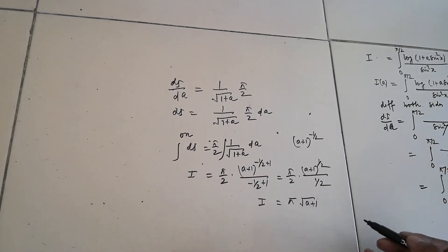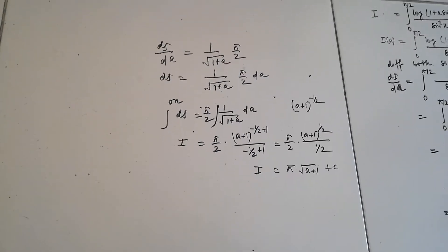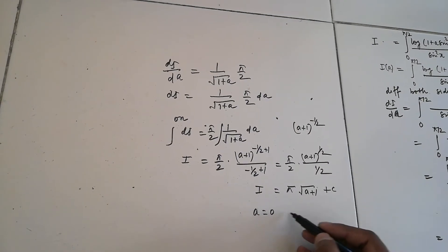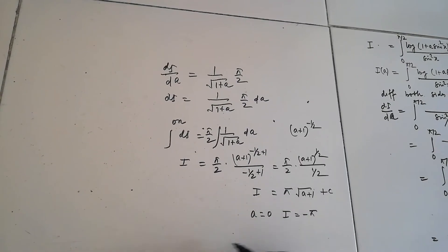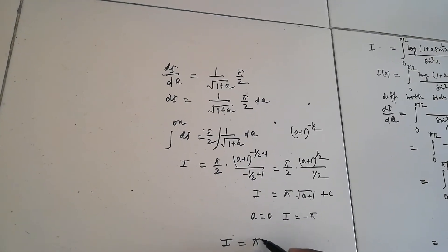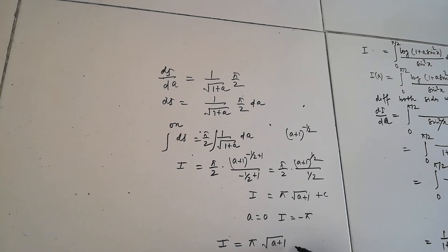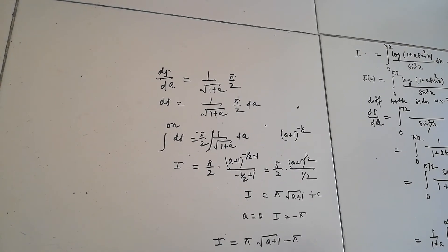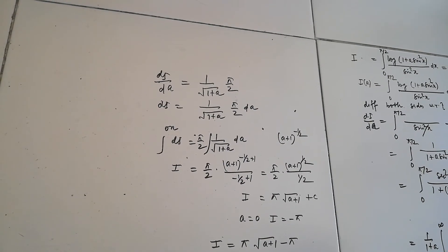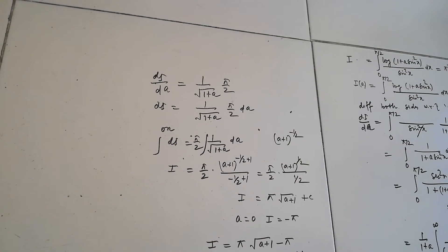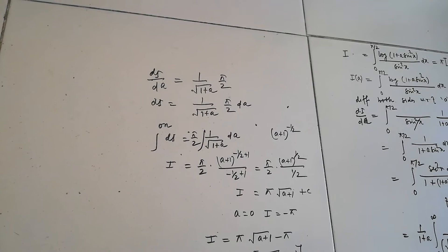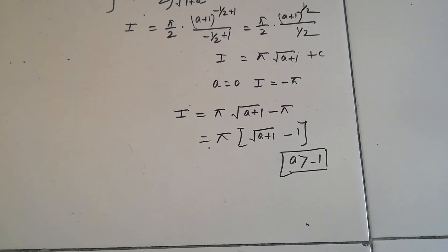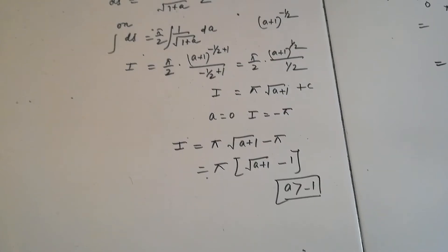After integration we get the constant of integration C. Applying the initial condition a = 0: when a = 0 the original integral is 0, so I(0) = pi·sqrt(1) + C = pi + C = 0, giving C = -pi. Therefore I = pi·sqrt(a+1) - pi = pi·(sqrt(a+1) - 1). The condition a > -1 ensures the expression under the square root is positive, avoiding complex numbers.